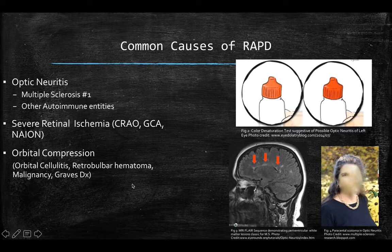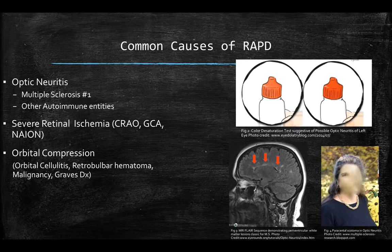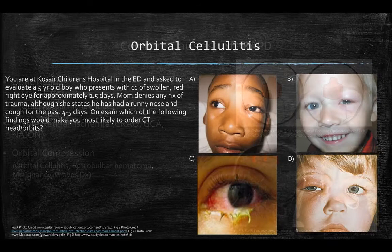Patients with MS can also get a paracentral scotoma during optic neuritis — a blurry spot in their central field of vision. Other causes of RAPDs include severe retinal ischemia, which we discussed in a previous lecture, and orbital compression — squeezing on the optic nerve. Many disease entities can cause pressure on the nerve, including orbital cellulitis, retrobulbar hematoma, malignancy, or Graves' disease, where the extraocular muscles are inflamed and hypertrophied to the point of squeezing on the nerve.